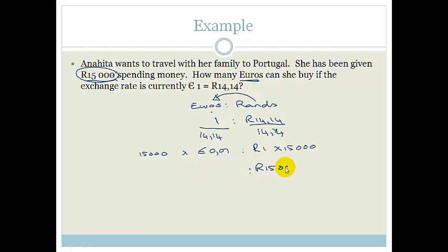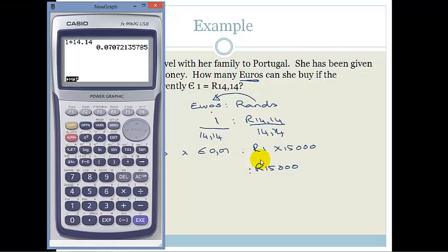Therefore, 15,000 Rand is the equivalent of, and again, we're going to pop out our calculator, and we're going to times this by 15,000, and we're going to get 1,060.82 Euros.